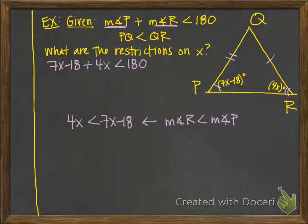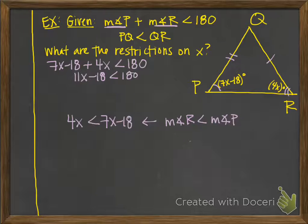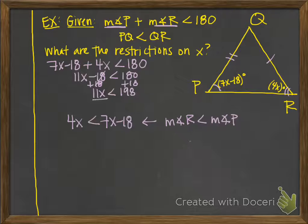Now we solve the two inequalities to find a range of values for x. For the first inequality, combining like terms: 11x − 18 < 180. Adding 18 to both sides: 11x < 198. Dividing both sides by 11: x < 18. That's one part of our answer.